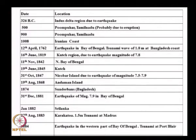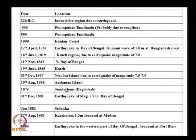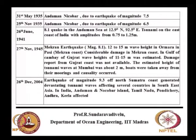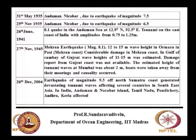There are various historical tsunami locations starting from 326 BC, then April 12, 1762, 1868, Bay of Bengal, Andaman Island, Sundarbans, Sri Lanka, and Pumbuhar — all places where tsunamis have occurred. The latest and one of the worst was on December 26, 2004.